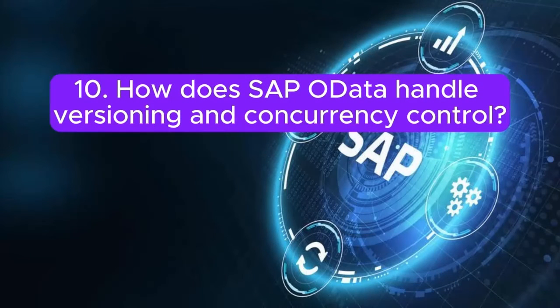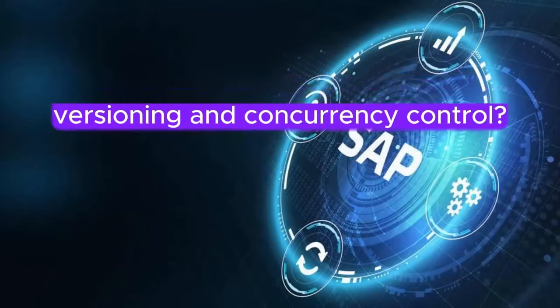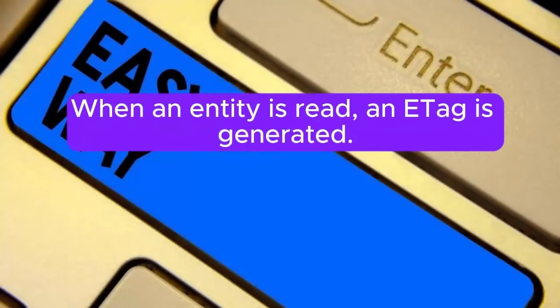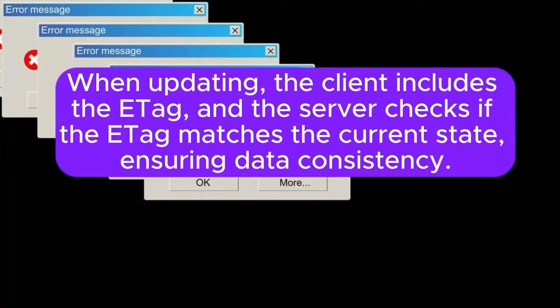Question 10: How does SAP OData handle versioning and concurrency control? OData supports ETags (entity tags) for concurrency control. When an entity is read, an ETag is generated. When updating, the client includes the ETag, and the server checks if it matches the current state, ensuring data consistency.